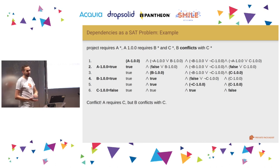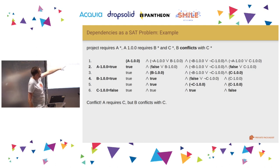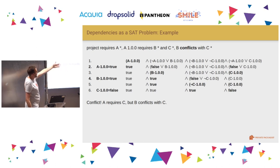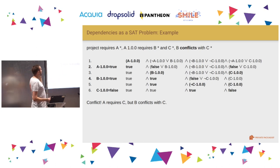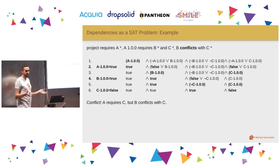It can go the other way when there's a conflict — say B conflicts with C instead of depending on it. You start the same way, B1 is true, fill it all in. But then you arrive at NOT C1 AND C1. If C1 is false, the last clause evaluates to false. There's no way to complete the Boolean expression so all variables evaluate true. That's a conflict, and Composer tells you: A requires C but B, which is also required by A, conflicts with C. You can't install these two things at the same time.